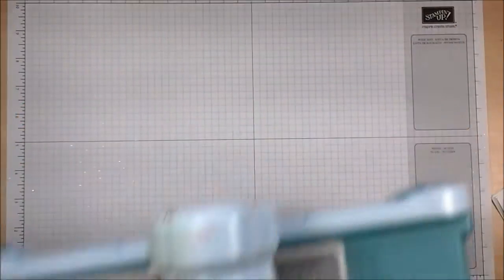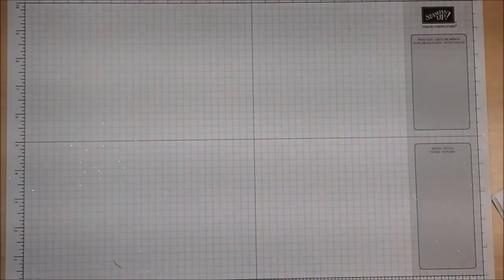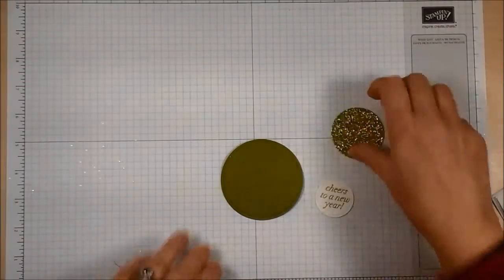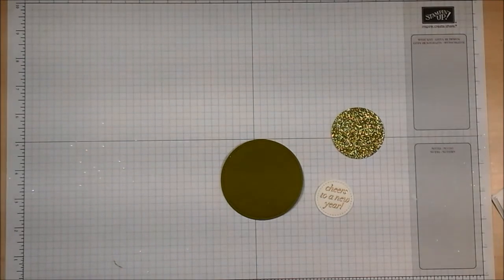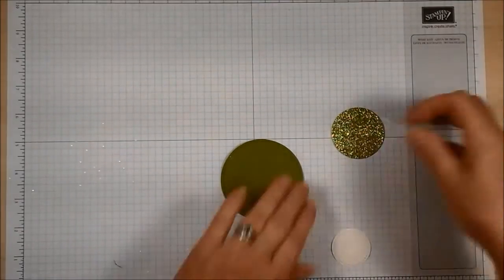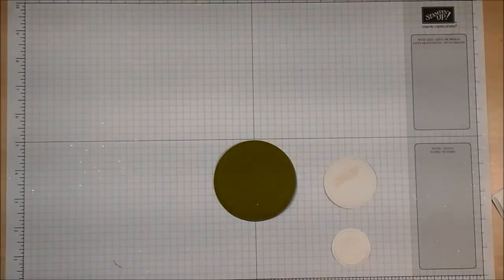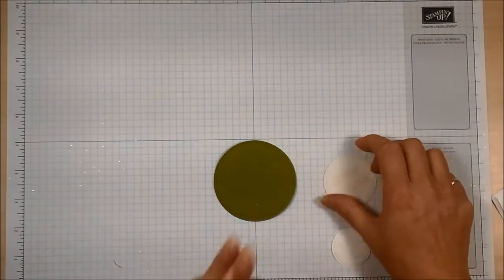So let's take the big shot away, finished with that now and we'll just bring in these three pieces. A really simple project. So I'm going to pick up, there we are, my tear and tape and I'm going to put just a little bit of tear and tape on the back of the glimmer paper, like that.